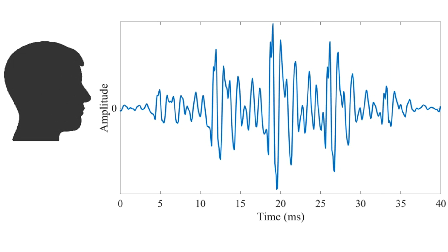Let us see what a typical speech signal looks like. For a person who is talking, you see such a signal where the amplitude is on the vertical axis and time is on the horizontal axis, measured in milliseconds, with markings from 0, 5, 10, 15, and so on up to 40. Looking at the signal, in the middle there is a high amplitude level compared to the other local regions, indicating where the person was actually talking.